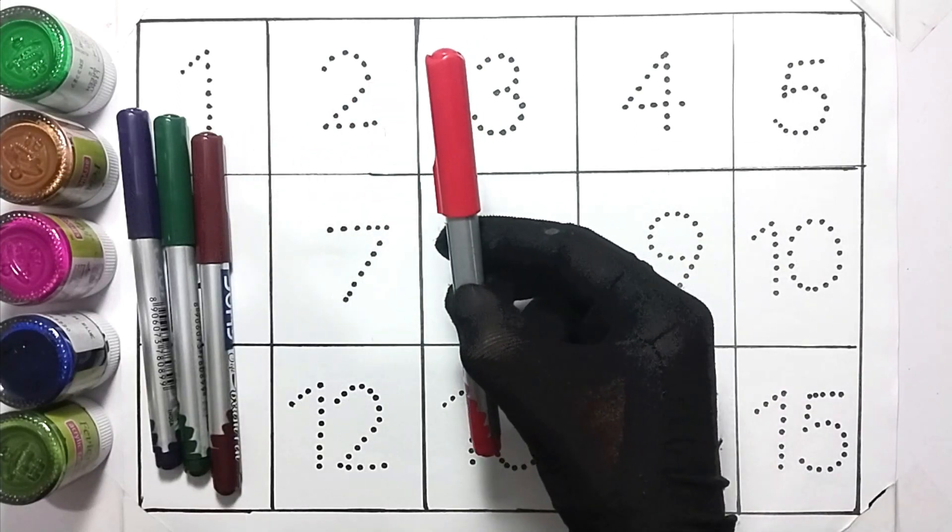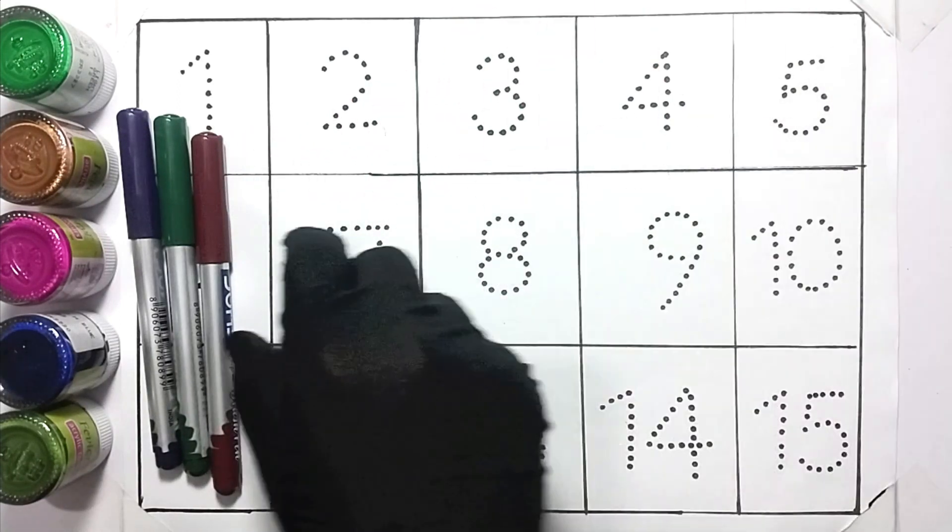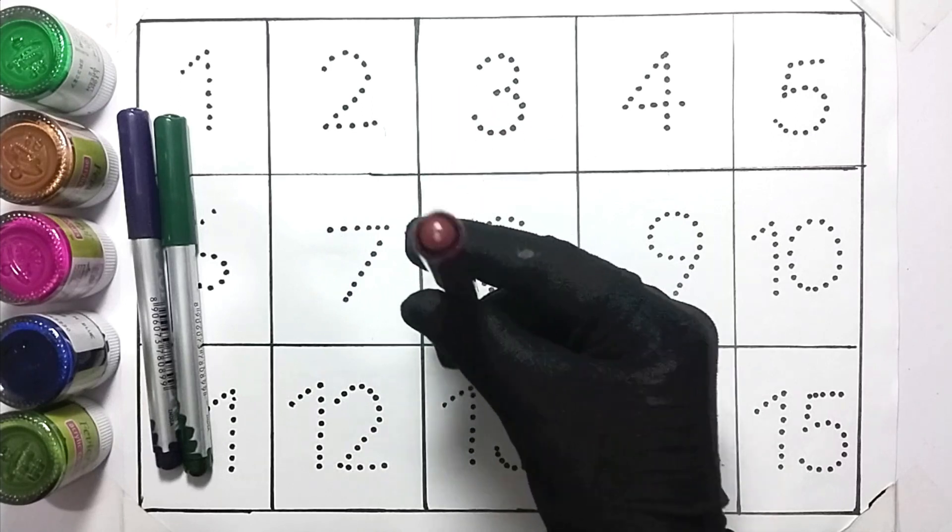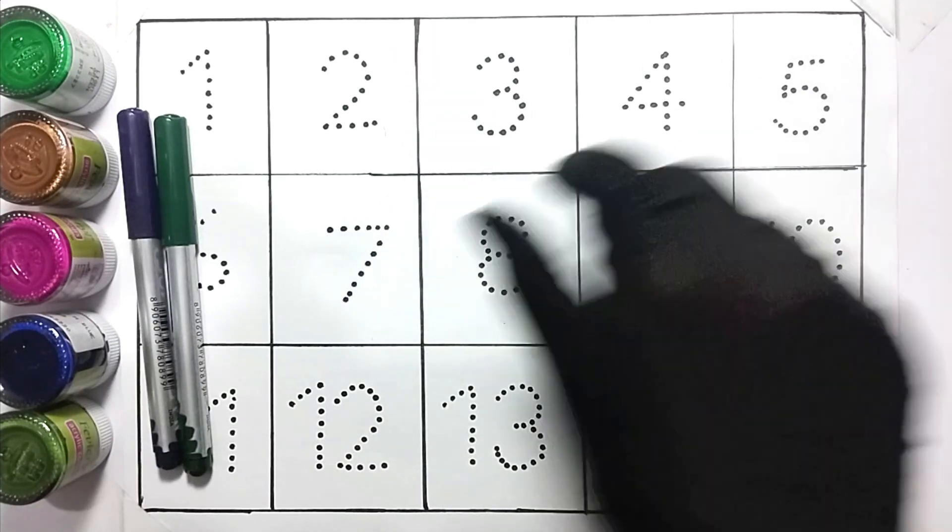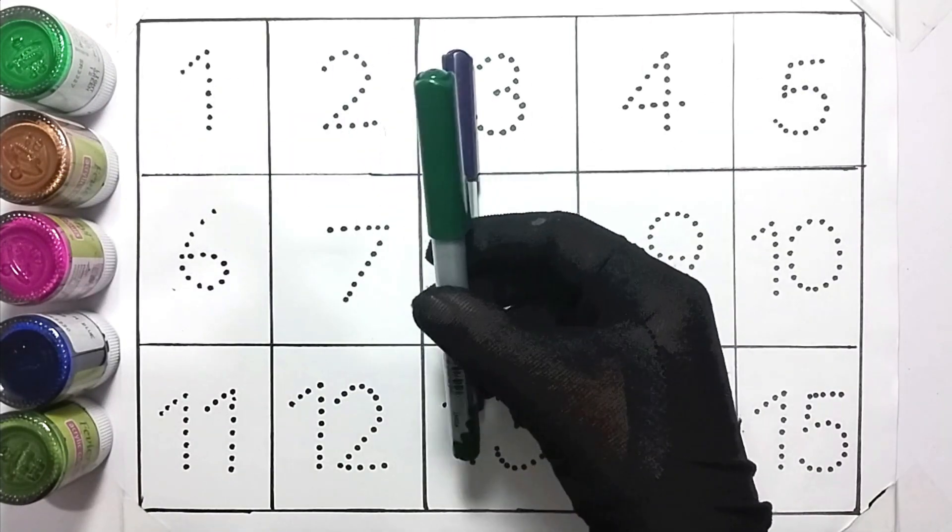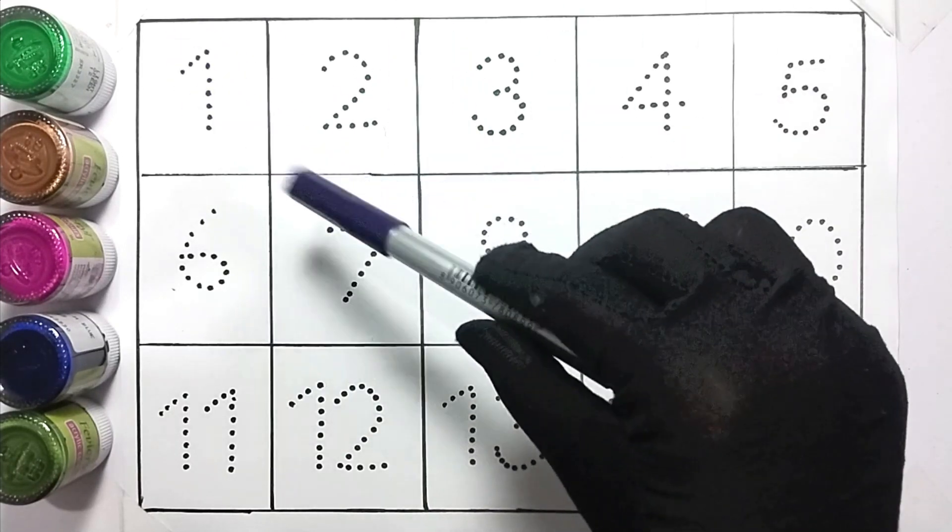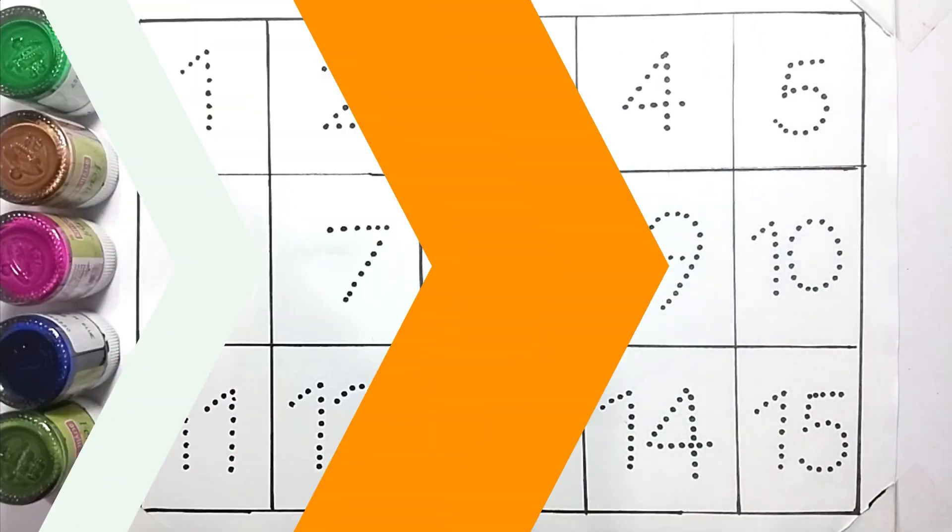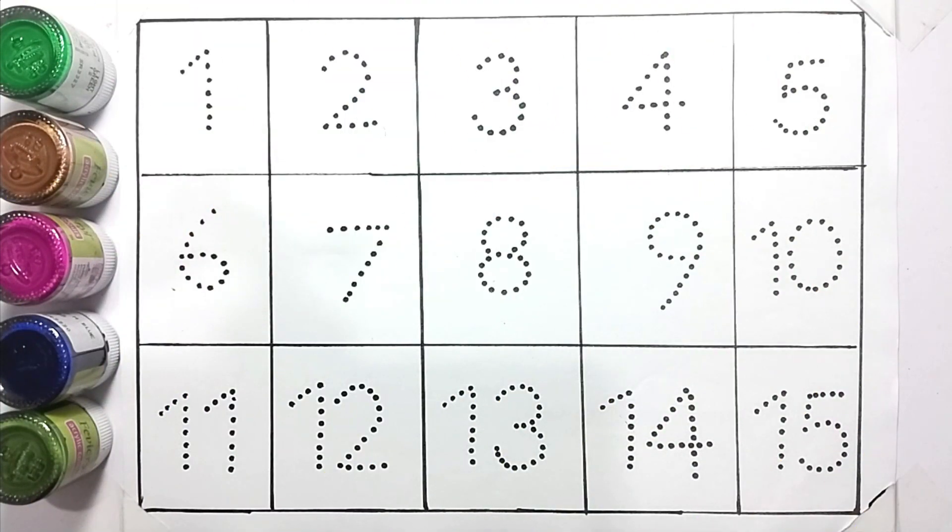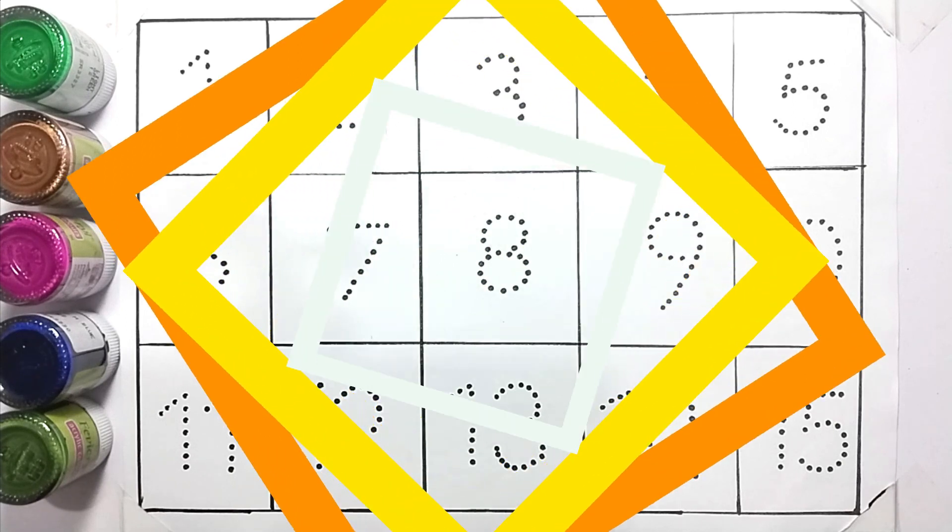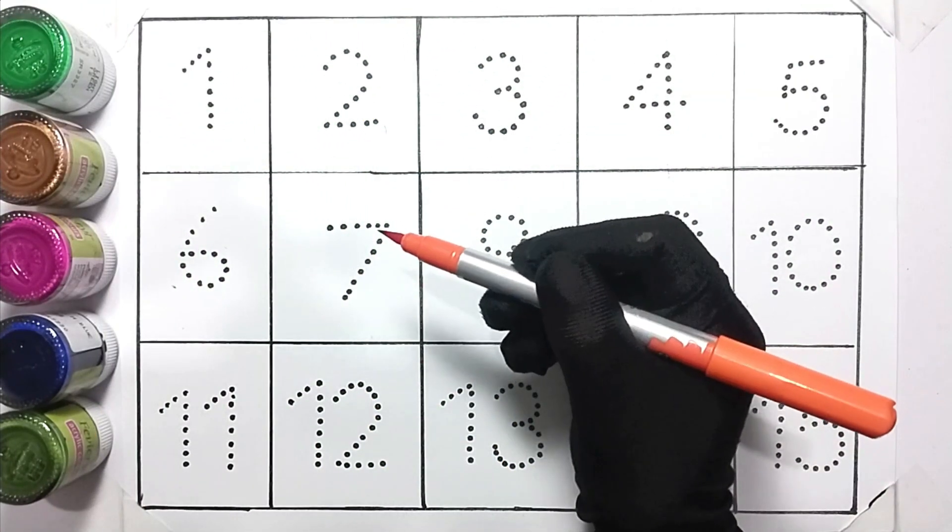This is red color. This is brown color. This is deep green color. This is purple color. So kids, let's start the video. Orange color.